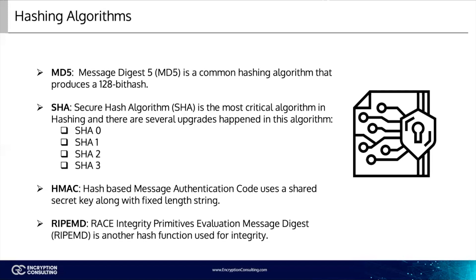RipeMD — Race Integrity Primitives Evaluation Message Digest — is another hash function used for integrity. It is not as widely used as MD5, SHA, and HMAC.